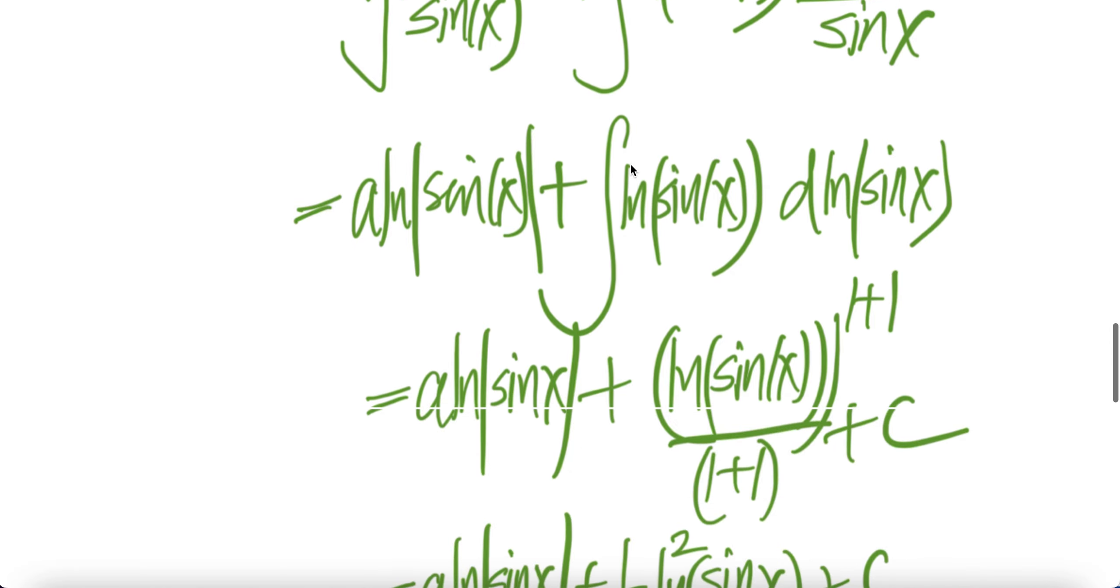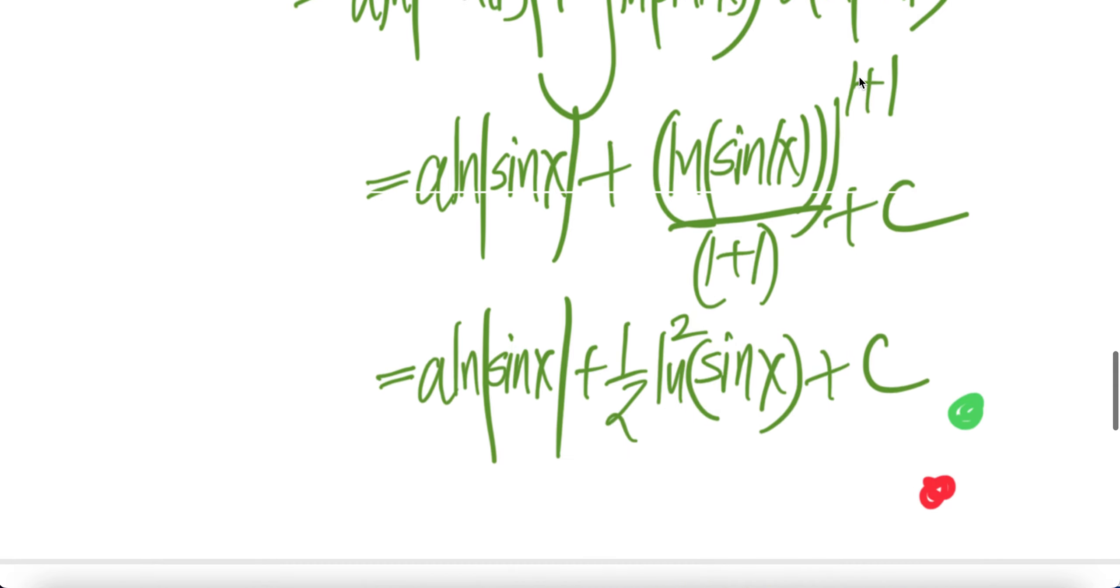Now here you have integral of y dy you get y to the 1 plus 1, where y is ln sine x. 1 plus 1 is 2 upstairs, 2 downstairs, ln sine x squared, and then 2 downstairs. Half times ln squared sine x. Done.